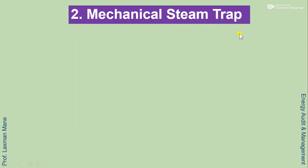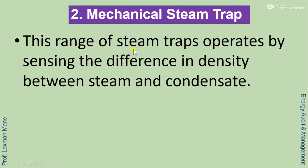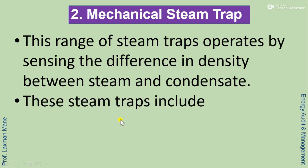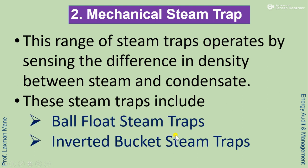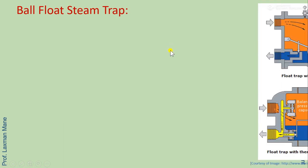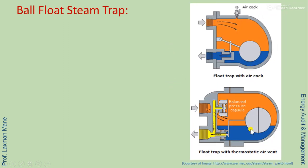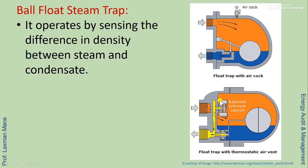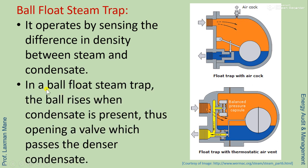The second major type is the mechanical steam trap. This range of steam trap operates by sensing the difference in density between steam and condensate. Mechanical steam traps include two types: ball float steam traps and inverted bucket steam traps. In the ball float steam trap, the ball rises when condensate is present, opening a valve which passes the denser condensate.